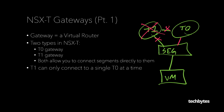If we eliminated the T1 — or maybe we don't even create it at all — we can also connect our segment directly to the T0. That is perfectly valid. Later in the course we will discuss the design decisions on why you would do one versus the other. Just be aware you can connect a segment to either a T1 or a T0, but it can only be connected to one at any given time. This segment cannot be connected to two T0s, two T1s, or a T1 and a T0 simultaneously.